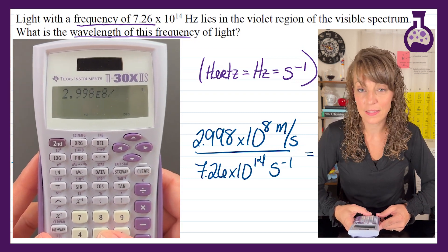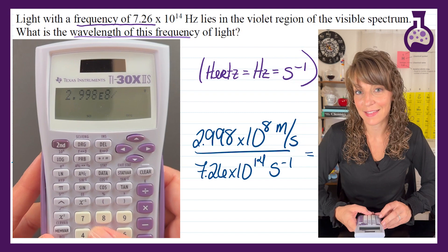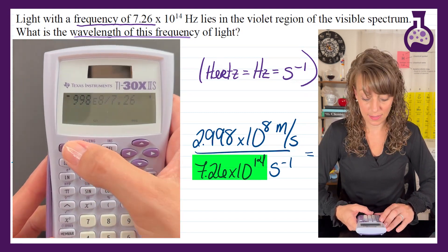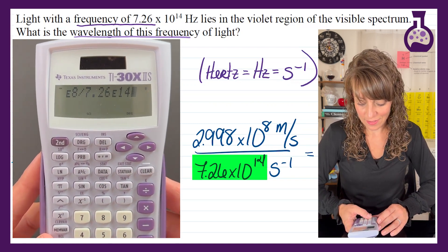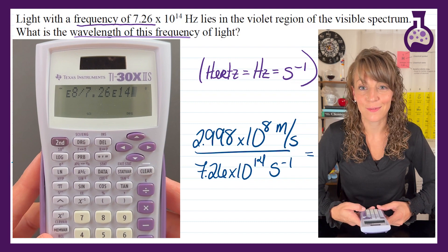Then we're going to hit the divide by button and then we're going to enter our frequency the exact same way. So 7.26, second button, double E, and then 14, the exponent. Then we just have to hit equals.